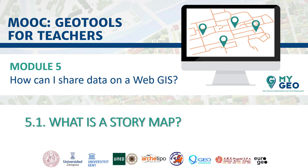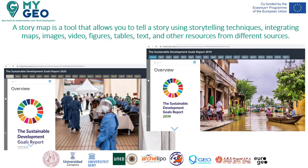What is a story map? A story map is a tool that allows you to tell a story using storytelling techniques, integrating maps, images, video, figures, tables, text, and other resources from different sources.